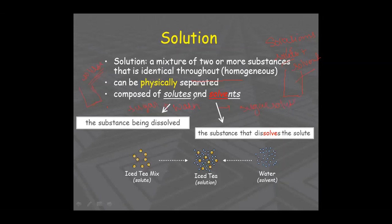In a sugar solution, the substance taken in small amount is the solute, and the one taken in large amount is the solvent. In other terms, the substance which is being dissolved is the solute, and the substance that dissolves it is the solvent. In sugar solution, what is the solute? Sugar — because sugar is dissolving and losing its identity inside the water.